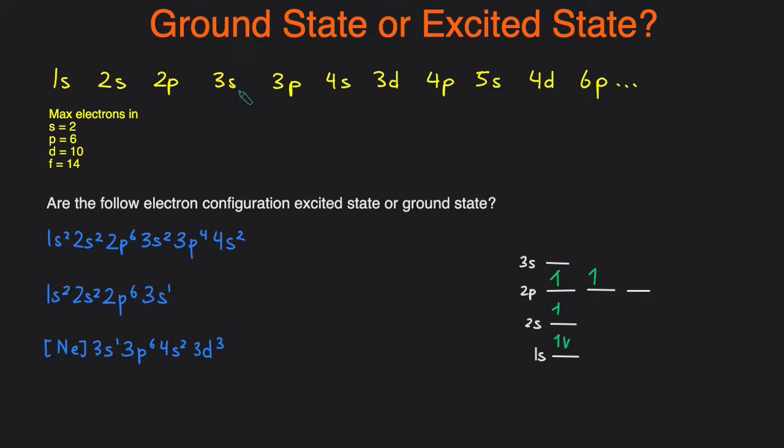Here I have the orders of the orbitals from low energy to high energy so 1s goes first and 2s and 2p etc and these are the maximum number of electrons in each of the different sub level. S's can hold 2, P's can hold 6, D's can hold 10 and then F's can hold 14. So as we go through these electron configurations we just want to make sure that the orders match up and all the lower levels are filled up before that we move on to the higher levels.